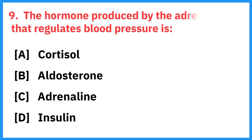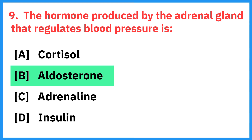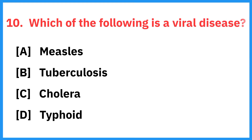The hormone produced by the adrenal gland that regulates blood pressure is? Correct answer is aldosterone. Which of the following is a viral disease? Correct answer is measles.